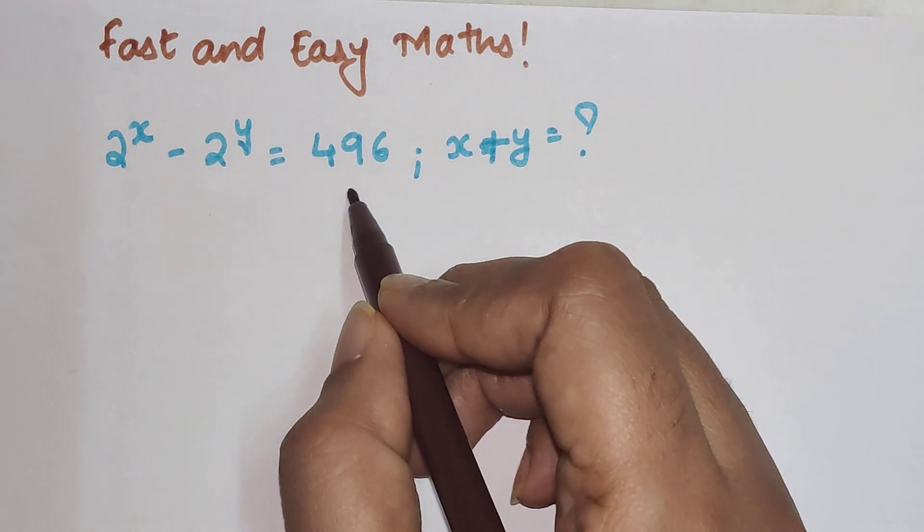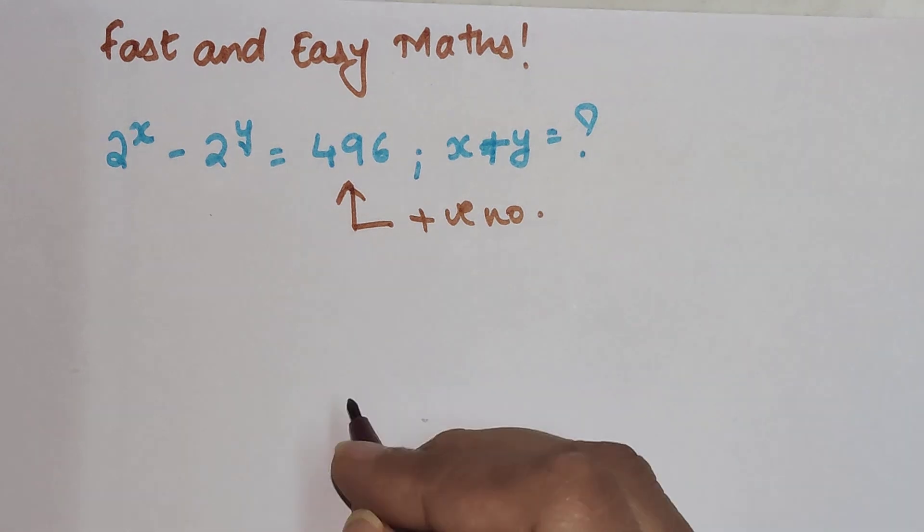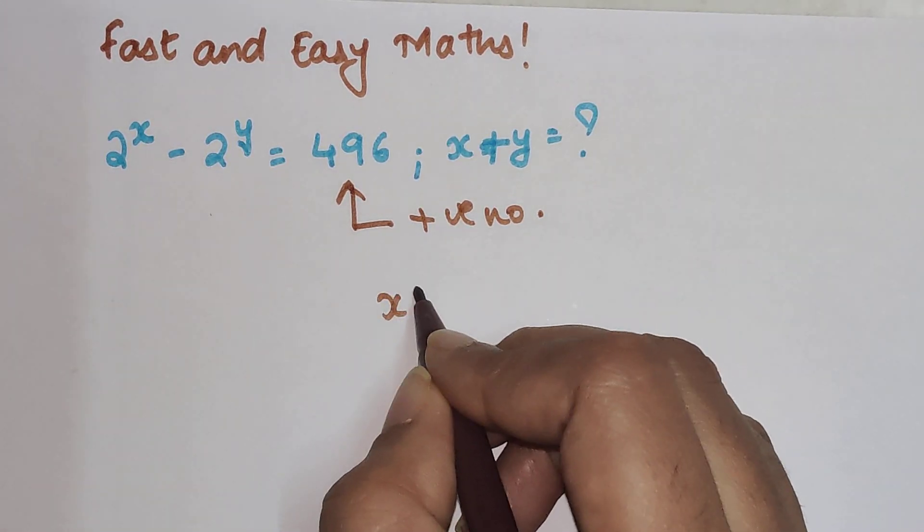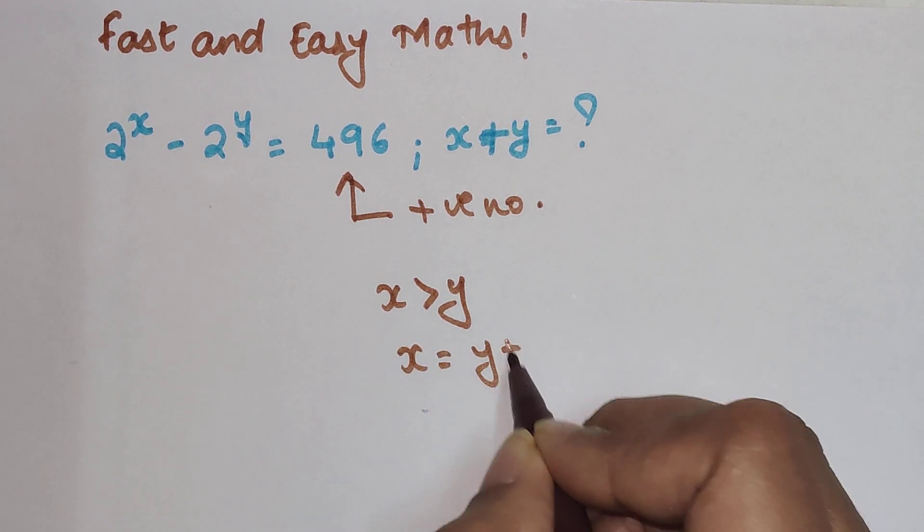But here I know that 496 is a positive number, therefore I can say x will be greater than y. So I can say that x will be nothing but y plus some value k.